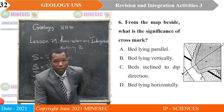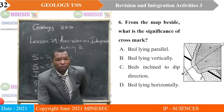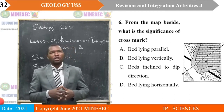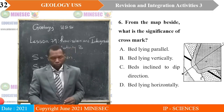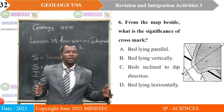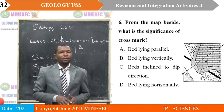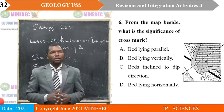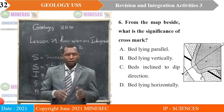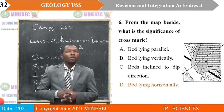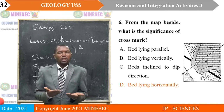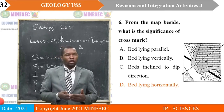Question six is related to the map. From the map beside, what is the significance of the cross mark? A — bed lying parallel; B — bed lying vertically; C — beds inclined to dip direction; D — bed lying horizontally. The correct answer is D. When that cross is on a bed, it indicates that it is an area not affected by tectonic activity, so it is lying horizontally.